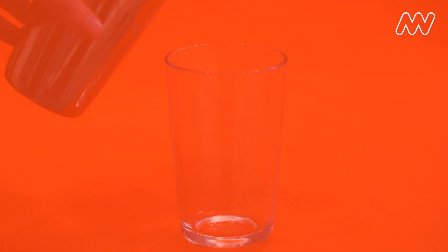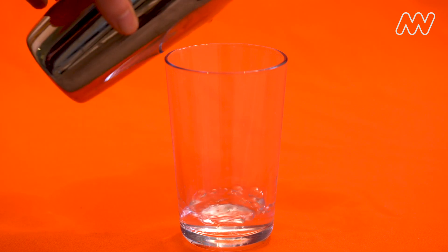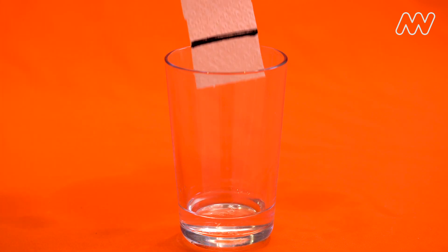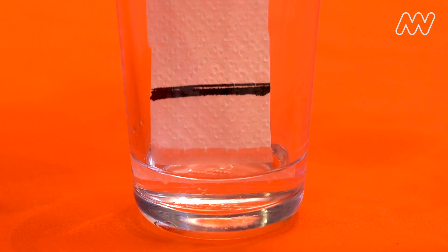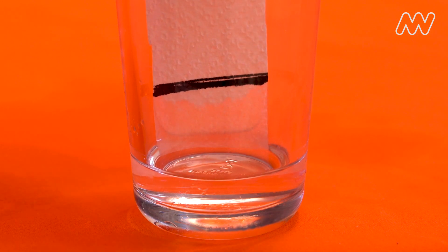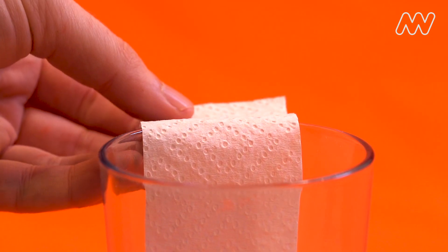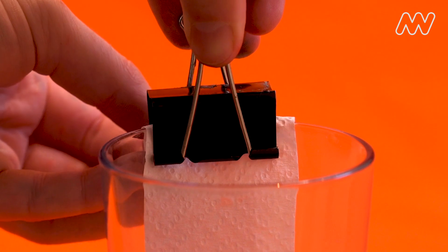Put a small amount of water into your glass then place just the very bottom of the paper into it, making sure you don't put your marker line under the water. Fold the top of the paper over the top of your glass and secure it with your peg or clip.